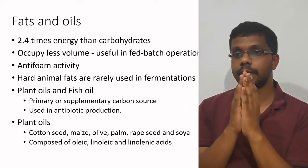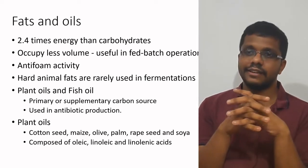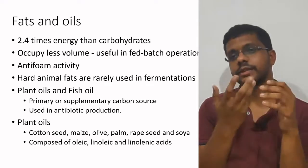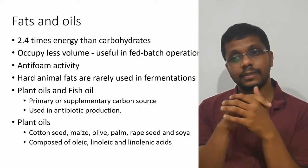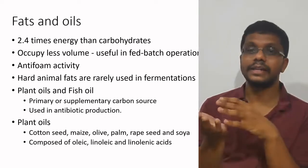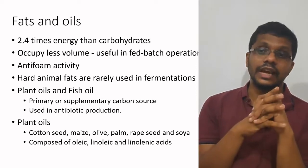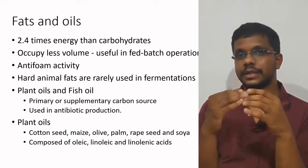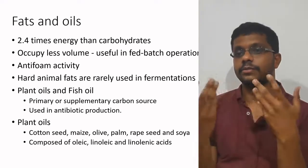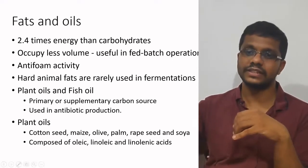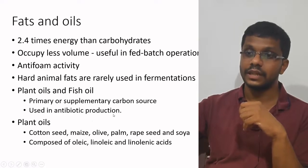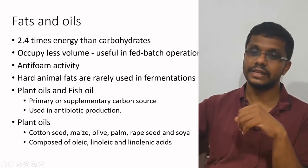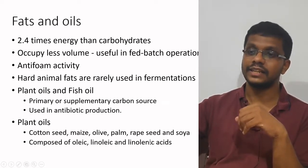Animal fat, which is solid at room temperature, is not generally used for fermentation. We mostly use plant oils or fish oils. Plant oils can be used as either a primary or supplementary carbon source and are mainly used in antibiotic production. They are not readily utilizable — microorganisms need to process the fats before utilizing them. Commonly used plant oils in industry include cottonseed oil, maize oil, olive oil, palm oil, and soya oil. These oils basically contain oleic, linoleic, and linolenic acids.